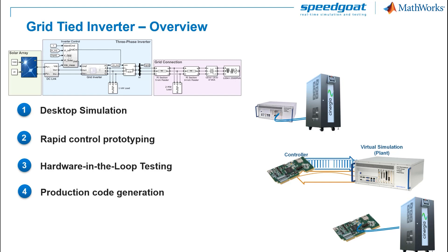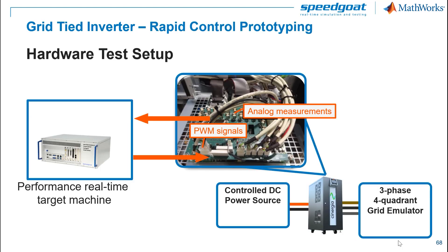We can learn more about this topic in a MATLAB Expo talk on grid-tied solar inverters. For doing rapid control prototyping for a grid-tied inverter, we could use a performance real-time target machine including a large amount of low-latency analog measurements. In this case we use Speedgoat analog I/O modules with DMA memory access to achieve the lowest latency with multiple measurements.